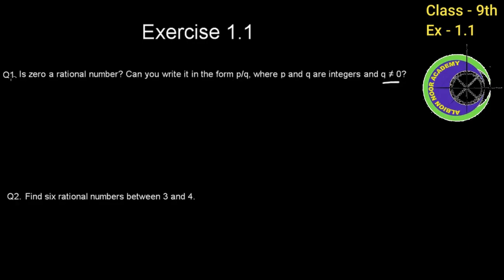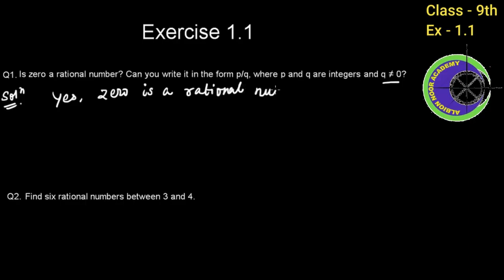So your solution will be: Yes, 0 is a rational number. How? I will show you an example. We can write 0 as 0 by 1, or 0 by 2, or 0 by 3.